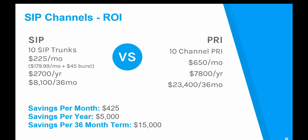You can also pay per minute when you need to burst up for peak times if you're getting more than those 10 calls. So if an 11th call comes in, your system will automatically burst up so you can receive that call. 10 channels is $179.99 per month. Plus, let's say you add 5,000 minutes of bursting — 5,000 minutes times $0.09 per minute is another $45 per month. So you're looking at $225 a month for 10 SIP trunks with bursting capability versus $650 per month for PRI T1. That's a potential $425 in savings per month — over $5,000 per year and nearly $15,000 over a three year term.